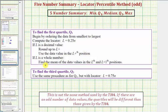If L is a whole number, then we find the mean of the data values in the L and L plus 1 positions. To find Q3, we use the same process, except we use the formula L equals 0.75 times n.